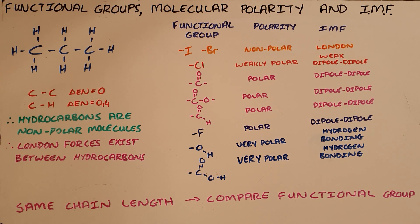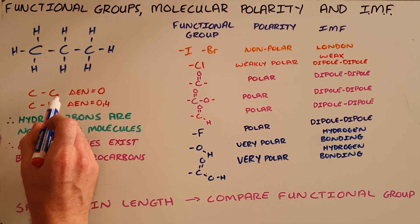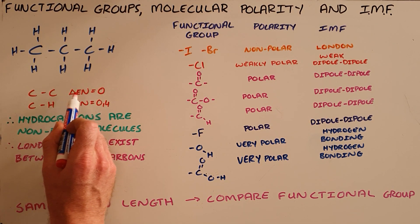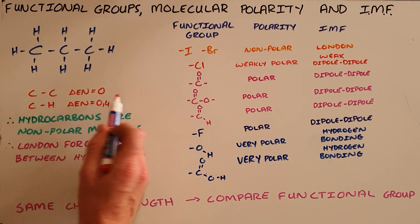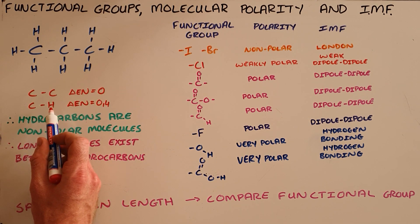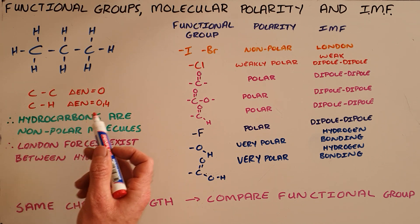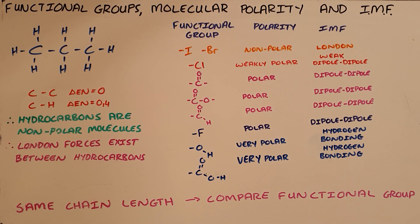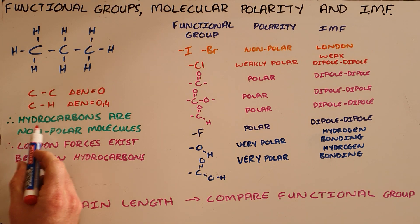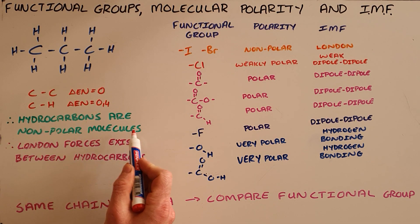Hydrocarbons are always considered to be non-polar molecules because they contain only carbon-carbon single bonds, which have an electronegativity difference of zero, and carbon-hydrogen single bonds, which have an electronegativity difference of 0.4. Both of those are considered to be non-polar bonds, and as a result, hydrocarbons are always non-polar molecules.